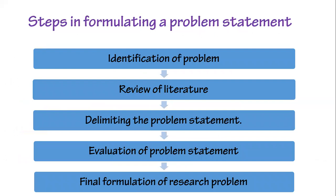Next, we will see the steps in formulating a research problem. First is identification of the problem, then review of literature, then delimiting the problem statement, evaluating the problem statement, and finally the formulation of the research problem. Each step will be covered in detail in the next part of unit two. I hope you understand part one of unit two. If you have any doubt, you can comment in this session. Thank you very much — see you with another unit.